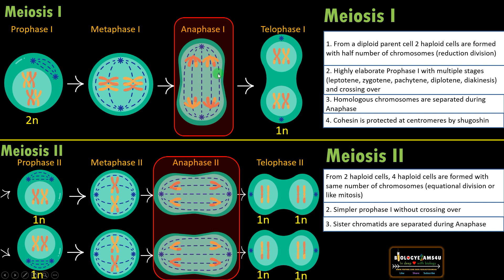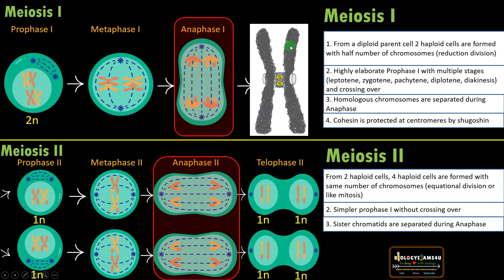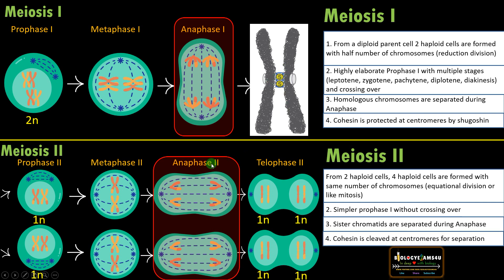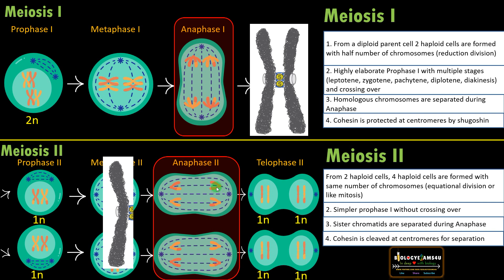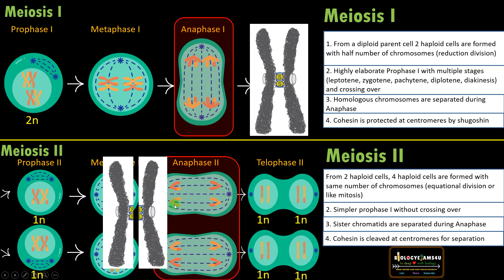The final difference: in meiosis I, cohesin is protected at the centromere by Shugosin. These are two proteins — the chromatids are held at the centromere primarily by a protein called cohesin, which is further strengthened by Shugosin. Whereas in meiosis II, cohesin is cleaved at the centromere, so that sister chromatids are separated during meiosis II.